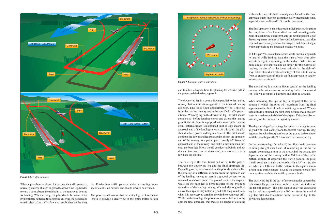When approaching an airport for landing, the traffic pattern is normally entered at a 45-degree angle to the downwind leg, headed toward a point abeam the midpoint of the runway to be used for landing. When arriving, the pilot should be aware of the proper traffic pattern altitude before entering the pattern and remain clear of the traffic flow until established on the entry leg. Entries into traffic patterns while descending create specific collision hazards and should always be avoided.